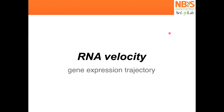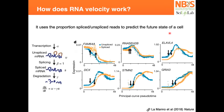Another way to find a path between different cell stages is doing RNA velocity, which is basically a summary of gene expression trajectories. RNA velocity works by checking the proportion of spliced and unspliced reads from your data.